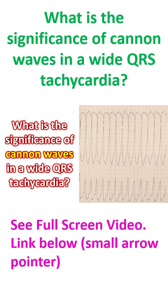Anyone working in the emergency department or intensive care unit would have experienced difficulty in deciding whether a given wide QRS tachycardia is of supraventricular or ventricular origin. Differentiation is quite important from the point of view of therapeutic options and prognostic significance. Supraventricular tachycardia with either a pre-existent bundle branch block or aberrancy during tachycardia can be mistaken for a ventricular tachycardia.